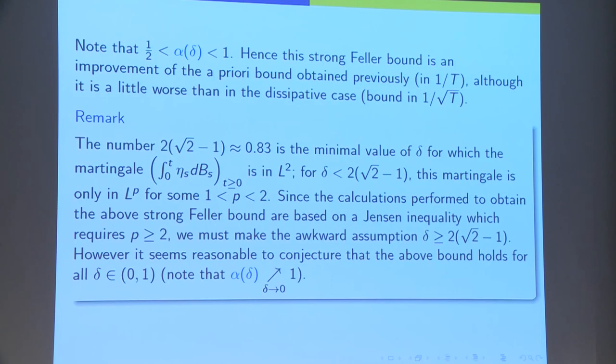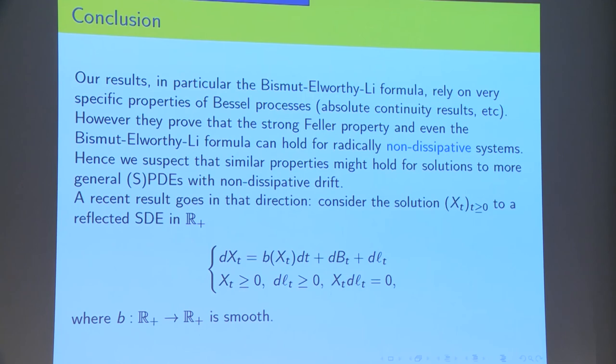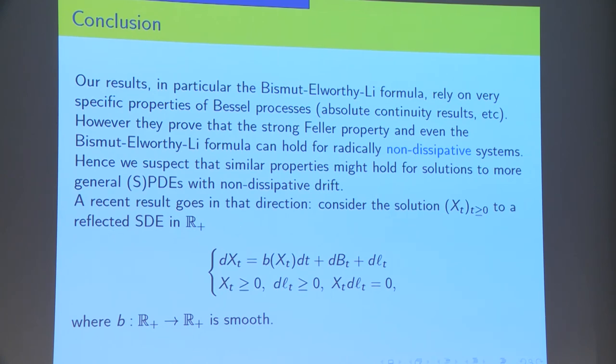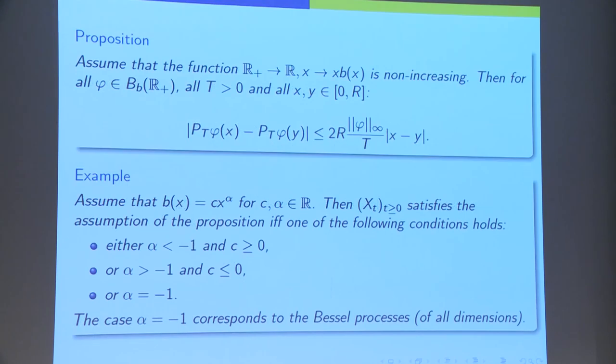The conclusion is that we obtained a Bismut-Elworthy-Li formula in a very non-dissipative case, which is very surprising. There's something not very satisfactory in the fact that we use very particular properties of the Bessel processes. But, we should try to develop more conceptual tools to treat more general processes. But, we have some partial results that suggest that, at least, the strong Feller bound of the type I have shown still hold for more general systems. And, that's all. I have here some references for you. And, I thank you for your attention.